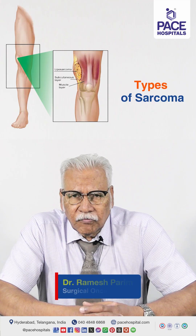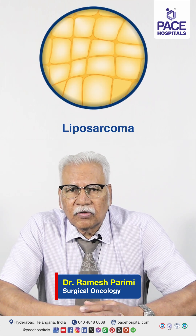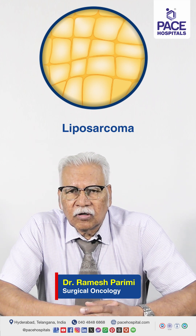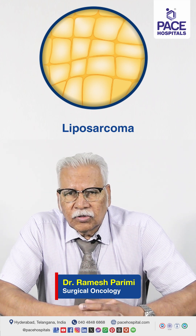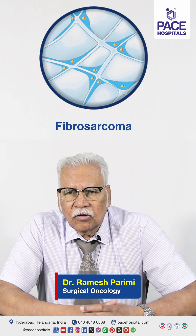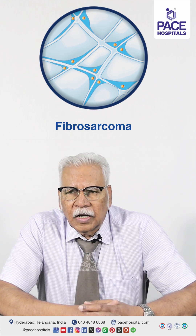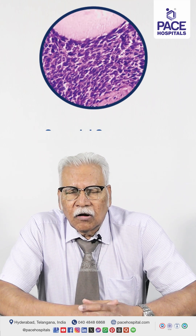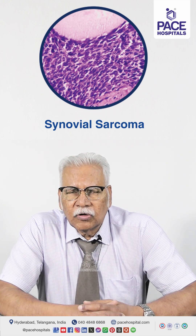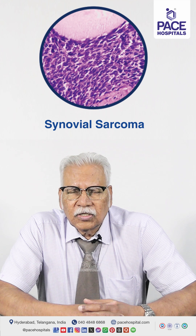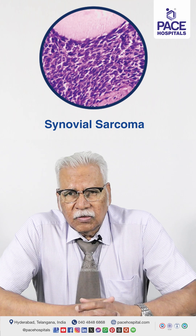Sarcoma can arise from the soft or connective tissues of the body. From fat, it is called liposarcoma; from smooth muscle, leiomyosarcoma; from skeletal muscle, it can also arise. From connective tissue proper, it is called fibrosarcoma. It can also arise from the synovial sheath — the layer present between two bones in a joint — called synovial sarcoma. Bone, being connective tissue, can develop osteogenic sarcoma, a typical example of bone cancer.